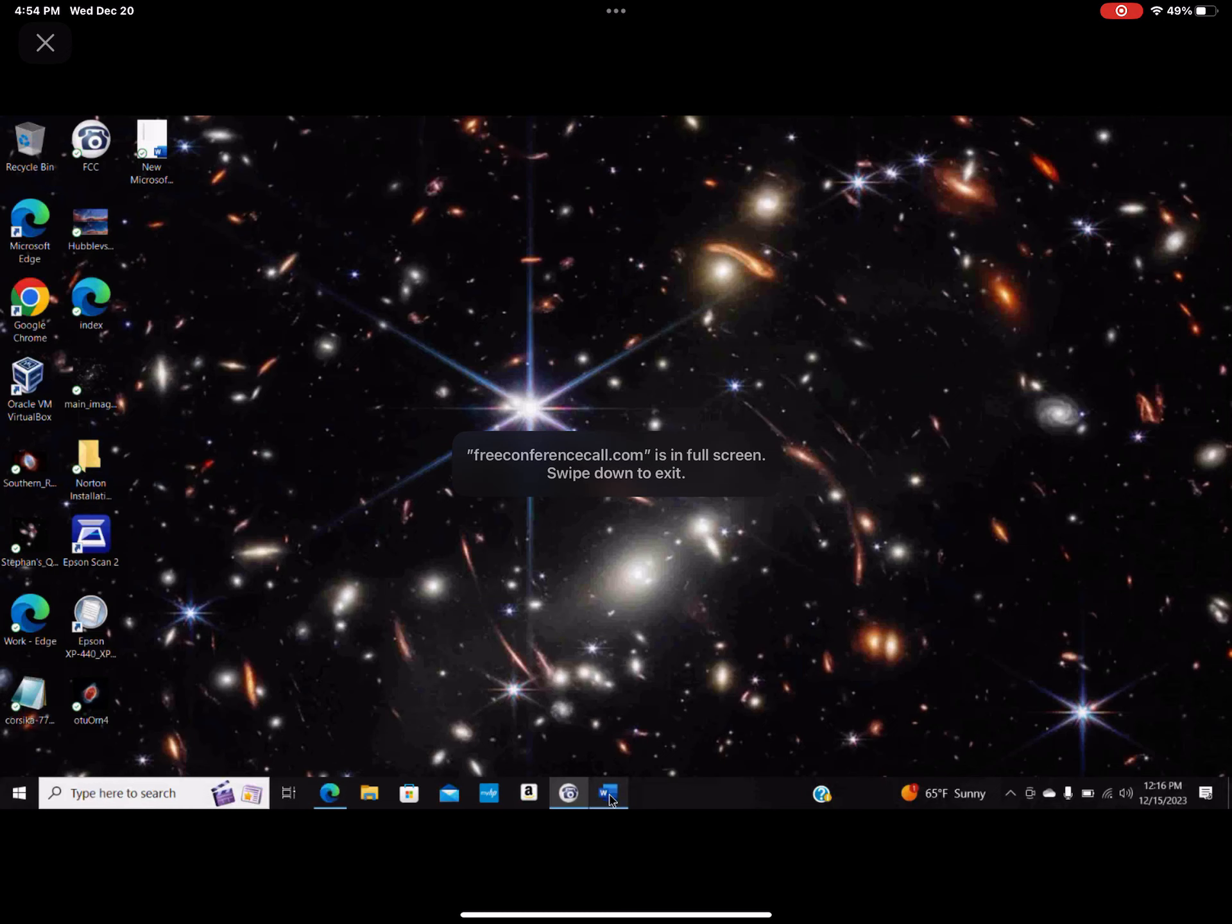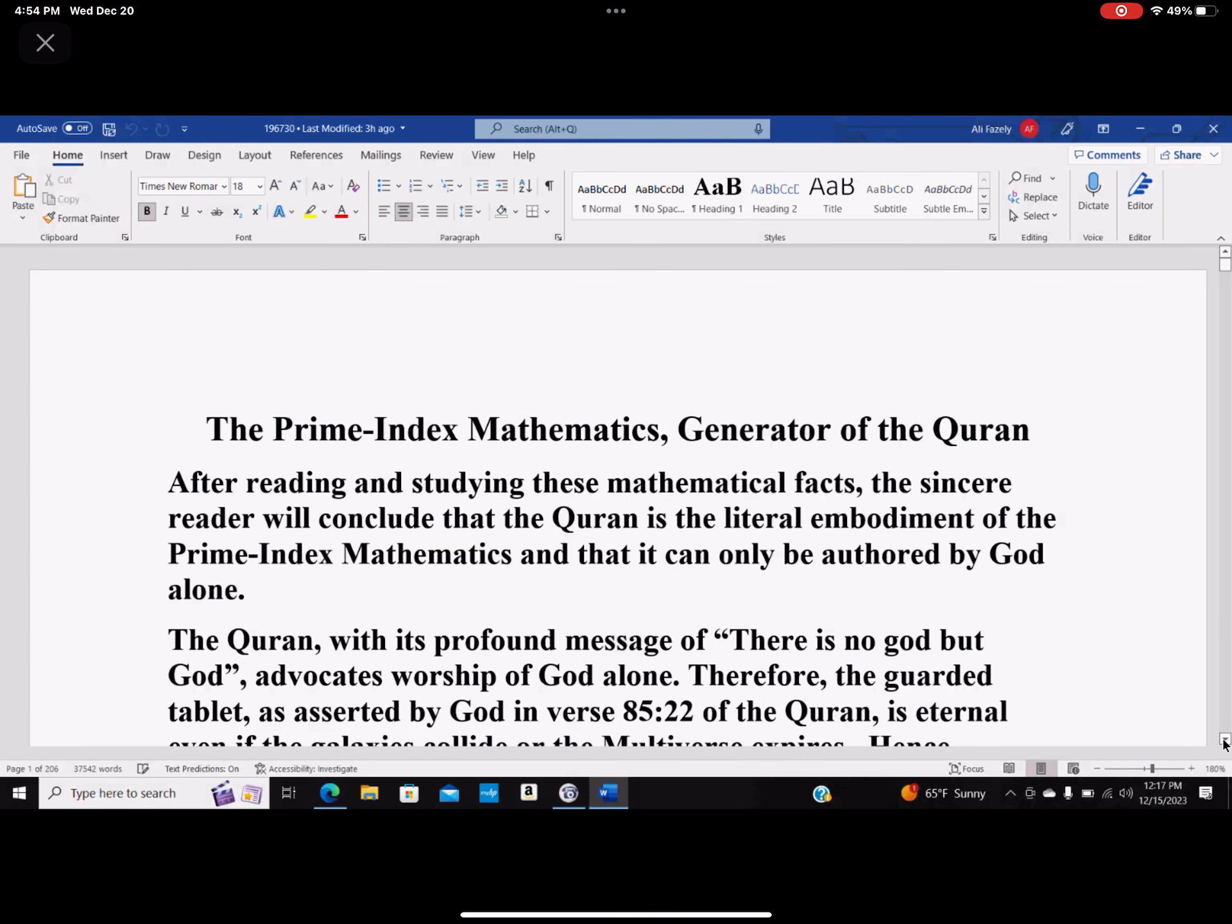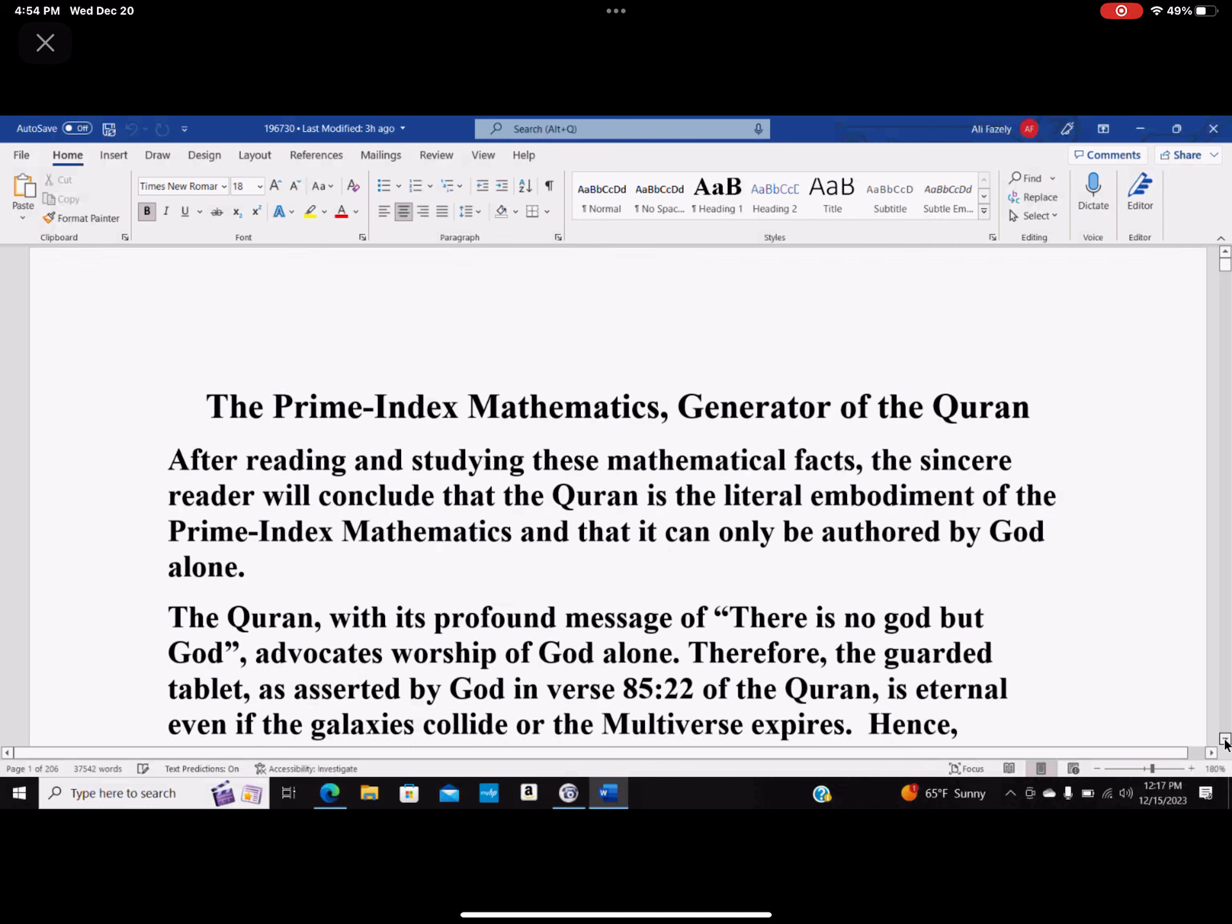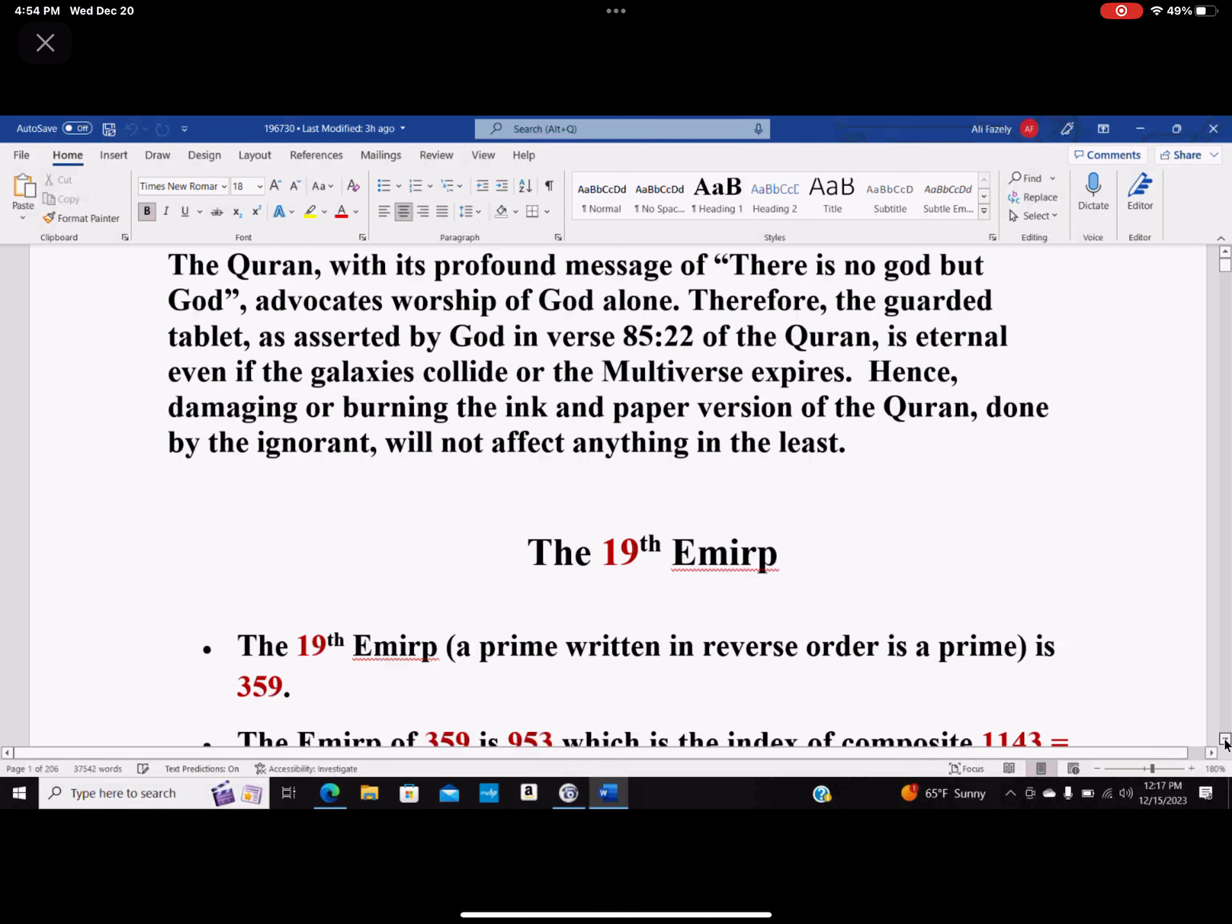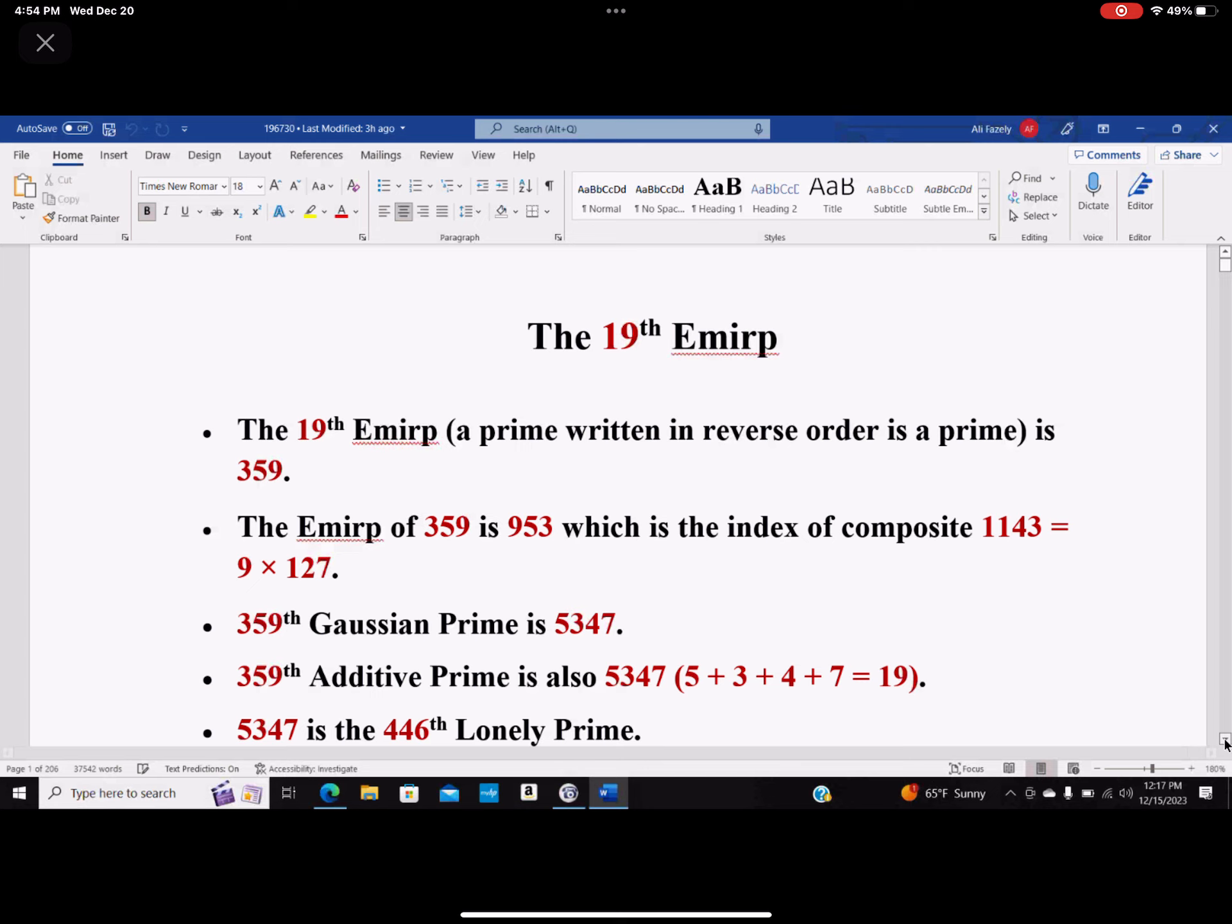Let's see here. I'm going to go to our write-up, and again, I put this already on the website so you don't have to write anything. The 19th EMIRP—EMIRP is a prime written in reverse or there is also a prime. So the 19th such prime is 359.